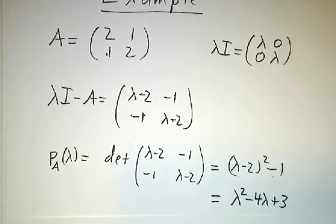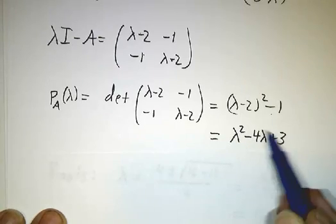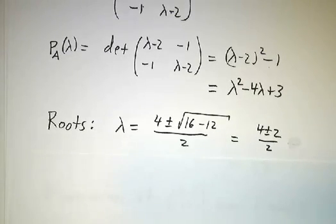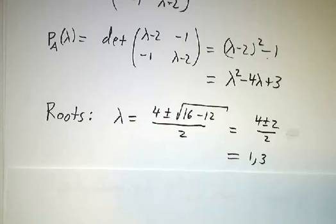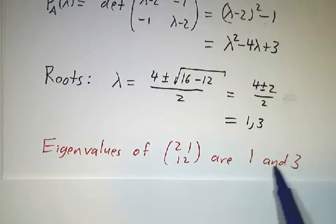Now, okay, you got the characteristic polynomial. Next thing is to find the eigenvalues. Well, those are just the roots of this quadratic polynomial. You can use a quadratic formula. You plug it in. 4 plus or minus 2 over 2. And you get that the roots are 1 and 3. And that means that the eigenvalues of the matrix are 1 and 3.